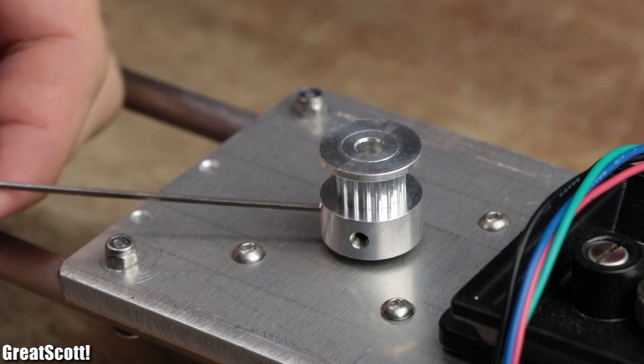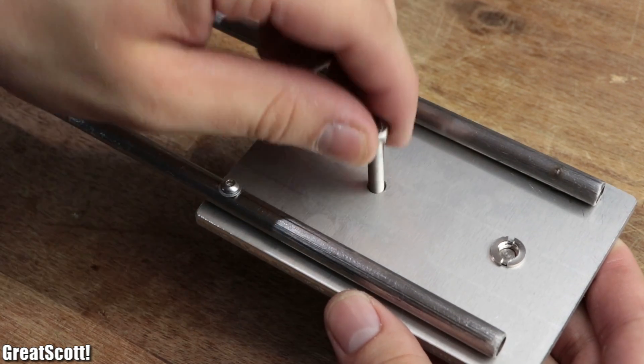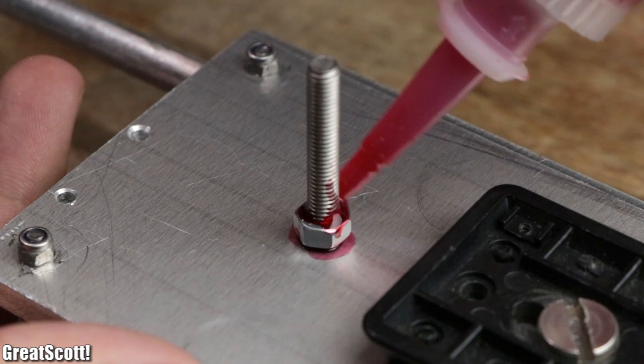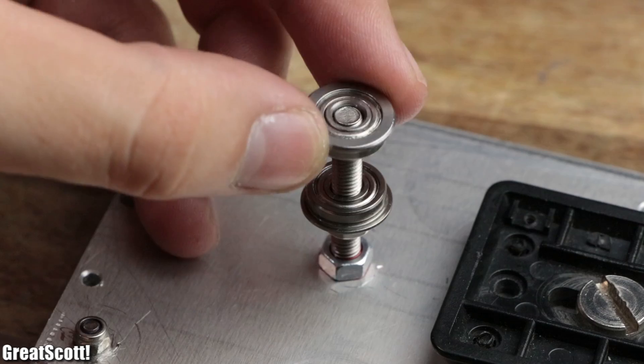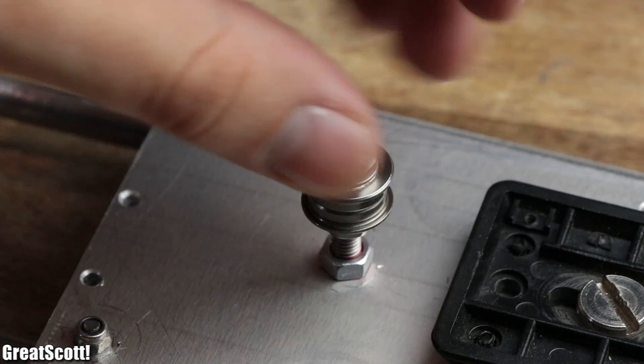As a counterpart for the pulley, the other stationary platform received a 40 millimeter long M5 bolt, which was secured firmly with a nut and a bit of Loctite. Then followed another nut, washer, two flank ball bearings, another washer, and finally a nut onto the bolt as well.